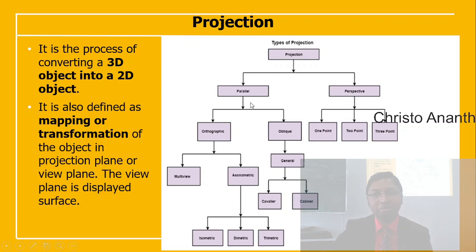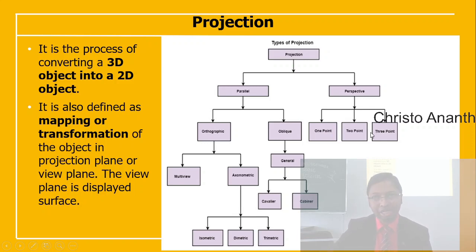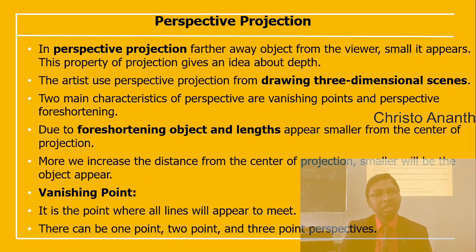In projection, you have parallel projection and perspective projection. Under parallel, you have orthographic and oblique. Orthographic includes multi-view and axonometric. Oblique includes cavalier and cabinet. Axonometric includes isometric, diametric, and trimetric. Perspective projection has 1-point, 2-point, and 3-point classifications.